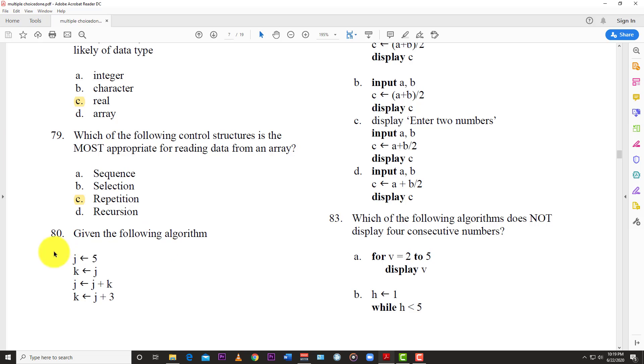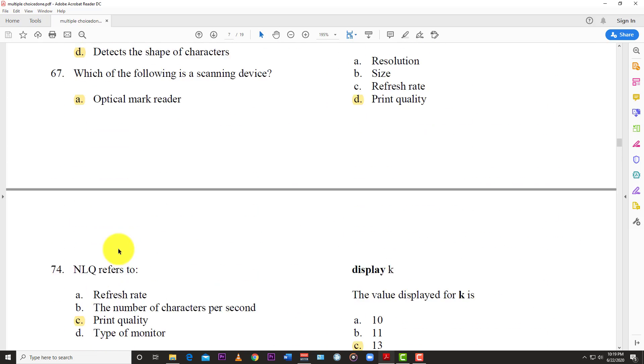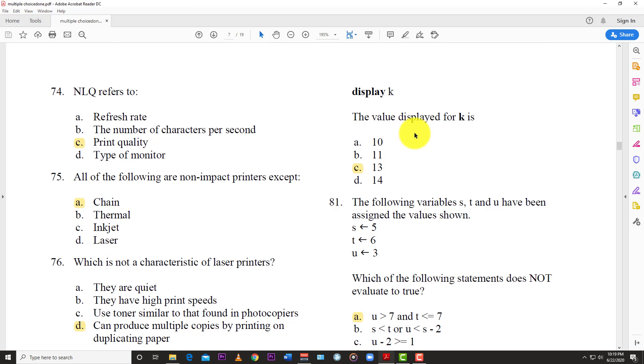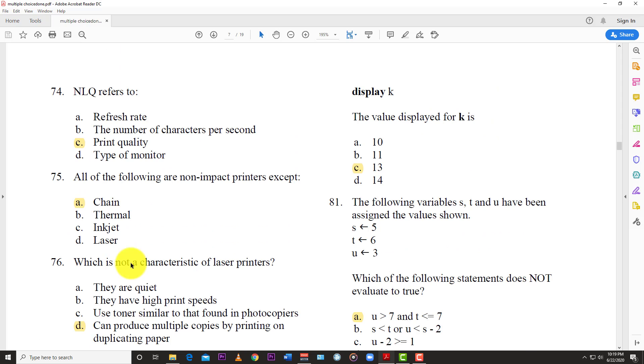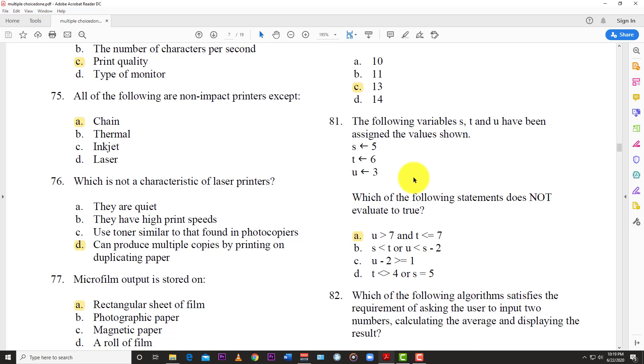Number 80: Given the following algorithm. So you have the algorithm right there. The value displayed for K is, and so you have K right there. The value displayed for K is, and the answer is C, 13. So you have to know, you have to brush up on your algorithms for sure.